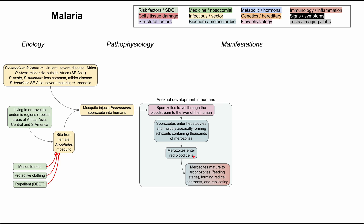Once in the red blood cells, one of two things can happen. The merozoites can mature into the next stage called trophozoites — the feeding stage — where they form red blood cell schizonts and replicate, producing thousands more. This is a very proliferative asexual development stage and is where most of the symptoms of malaria originate.